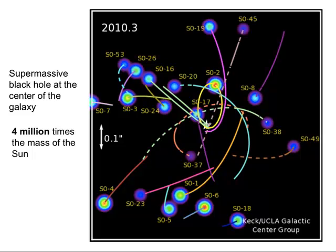A star is doing that whipping motion. Because we have all of these stars' orbits in the center of the galaxy, we can determine the mass of that central object extremely well. The mass required to make all these stars orbit the way they do is something like 4 million times the mass of the Sun.